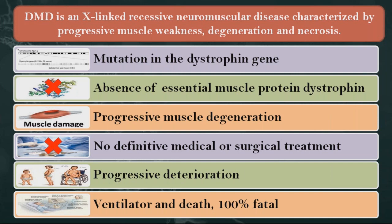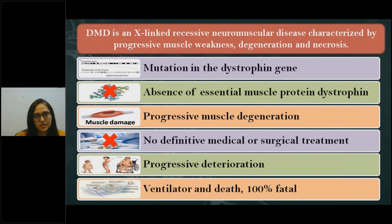Dystrophin is a protein in the muscle that is very essential for maintaining the structural or skeletal integrity of the muscle. In the absence of this dystrophin protein, muscle cells start dying even with normal or regular contractile stresses or normal day-to-day activities. This leads to progressive muscle degeneration. Unfortunately there is no definitive medical or surgical treatment, and children progressively deteriorate in strength and function, going on ventilator support somewhere between 20 to 30 years of age.